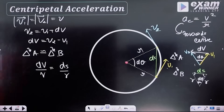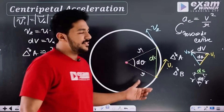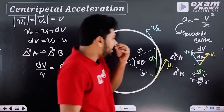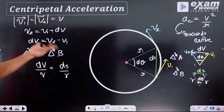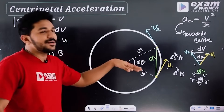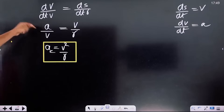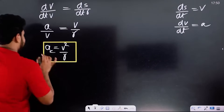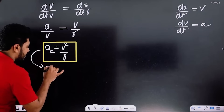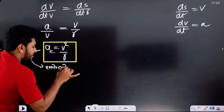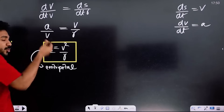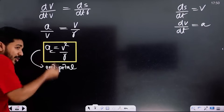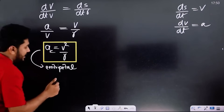Now the derivation is done. From the triangle, V2 equals V1 plus dv, so dv equals v2 minus v1. This is centripetal acceleration — AC equals v² by r. Centripetal acceleration depends on the speed of the object and the radius of the circular path. If radius increases, centripetal acceleration decreases.